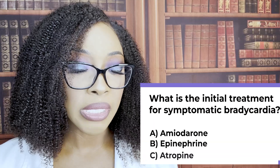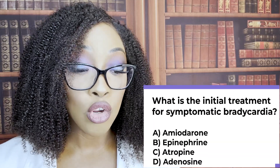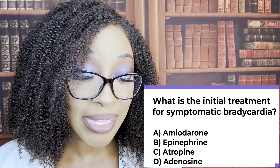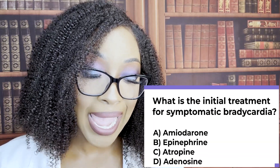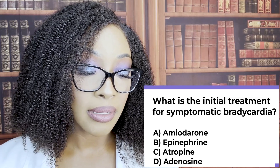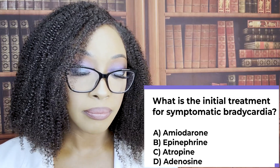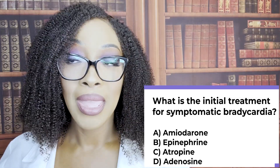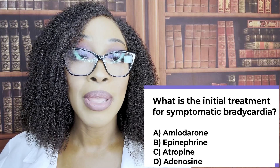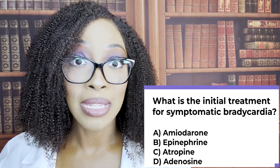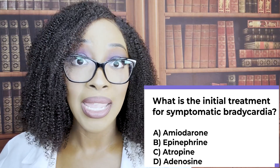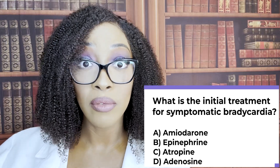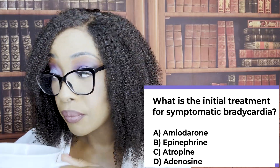What is the initial treatment for symptomatic bradycardia? A, amiodarone; B, epinephrine; C, atropine; D, adenosine? They ask about all four on the state board exams — AANC and AANP — so make sure you know all four.